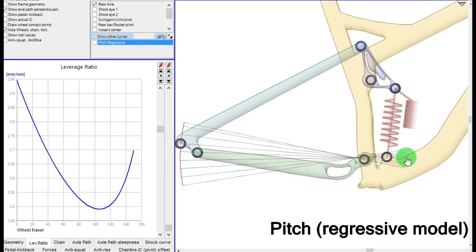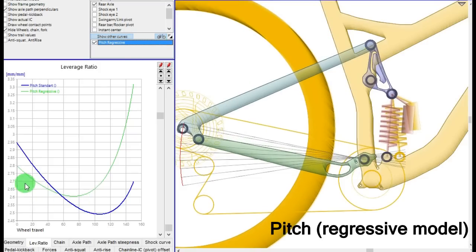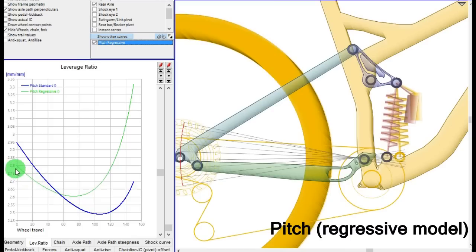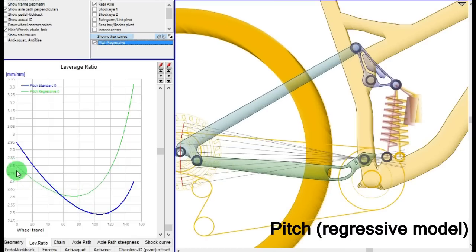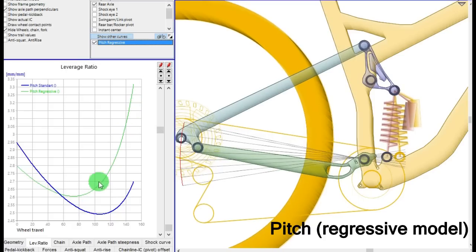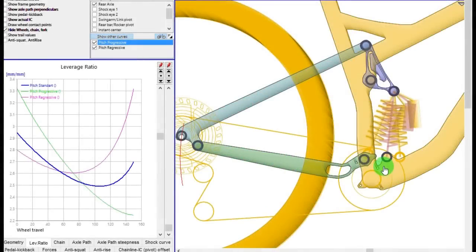So if we move the shock points three centimeters forward what happens is this. Okay, so now you have an almost linear bike in the first part of the travel and then a very, very regressive bike. So a very easy to bottom out bike.